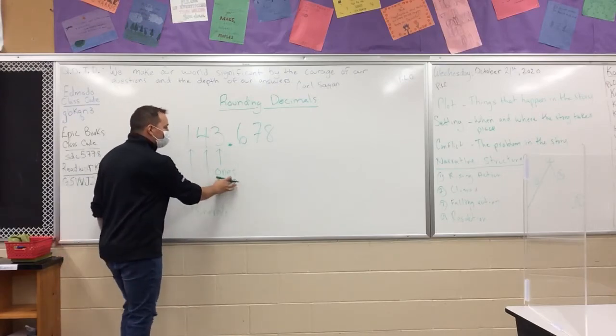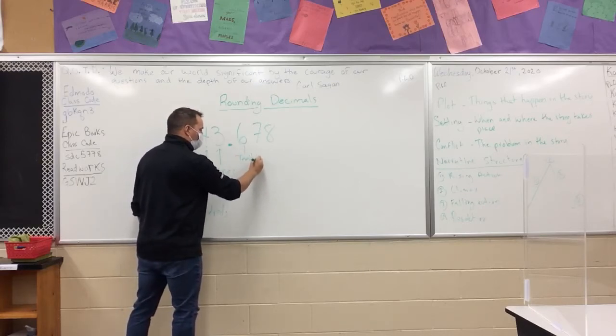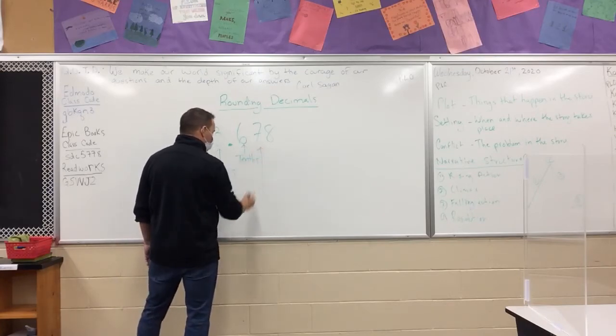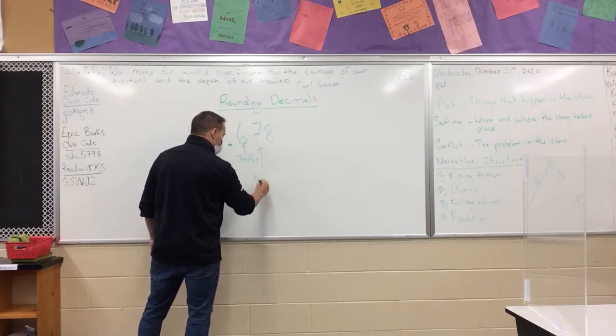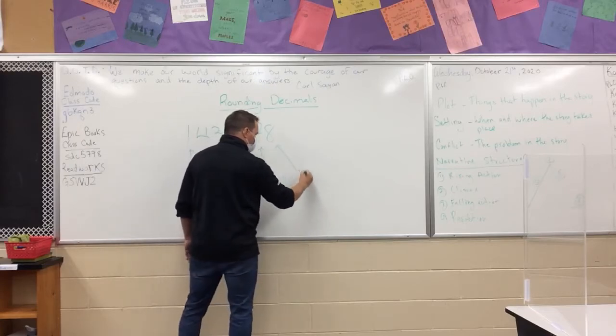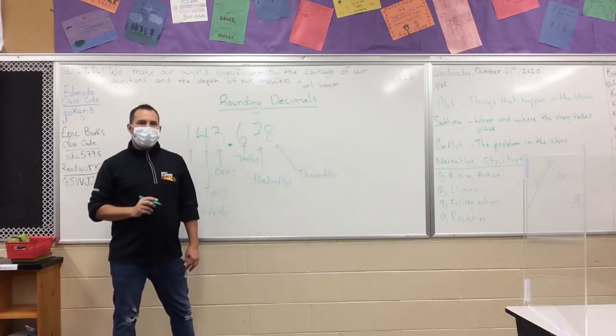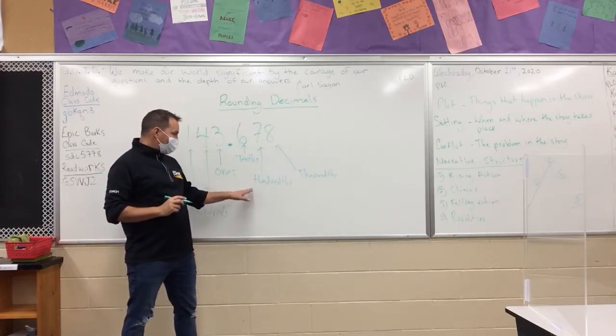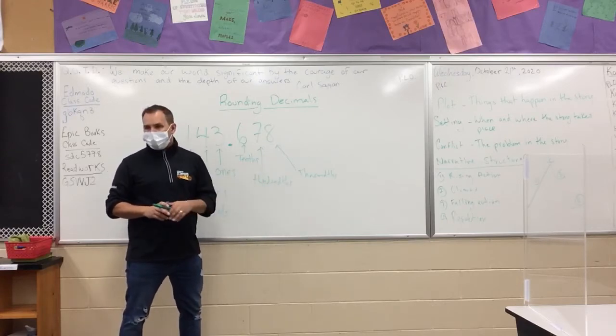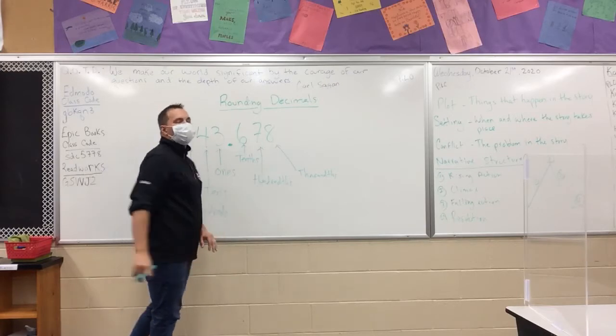There is no ones when we go into this column. It goes straight to what we call tenths. What comes after the tenths? We then have the hundredths. Up here we've got thousands. Anyone know what comes after thousands? Ten thousands, then hundred thousands, millions. So it's important that we know these names when we're rounding decimals.